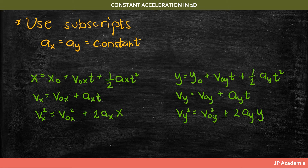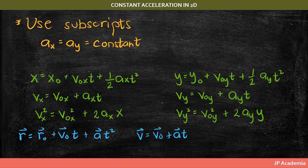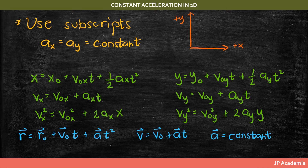We can also write these equations in a more general vector form. So we have the position vector r and the general velocity form, with the assumption that acceleration is constant. Note that we should use the proper sign convention, wherein motion to the right is positive for x and motion going up is positive for y.